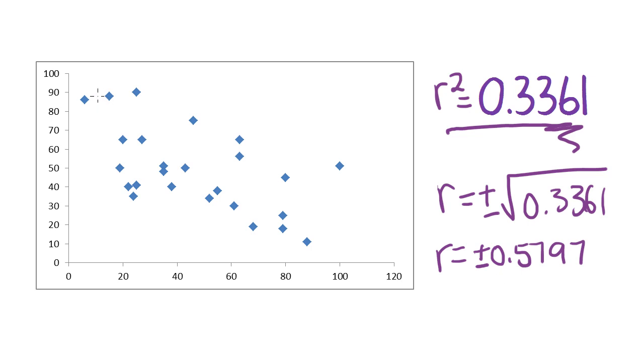This one's going down the hill, so we know we need the negative of these two. So r is going to be negative 0.5797.